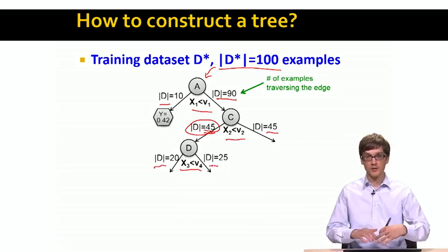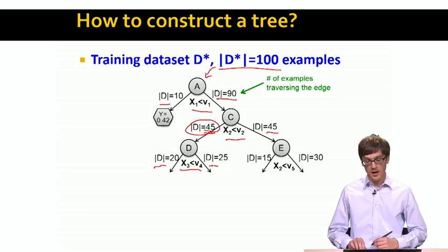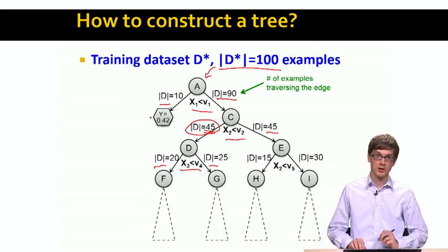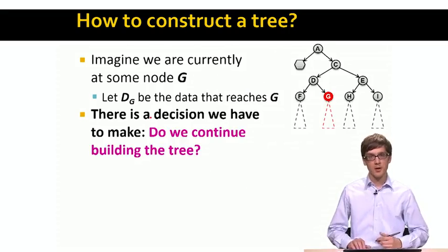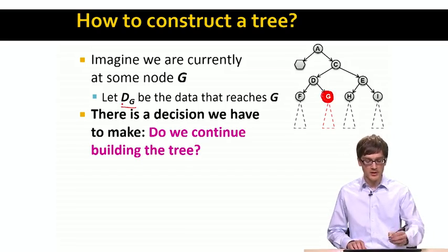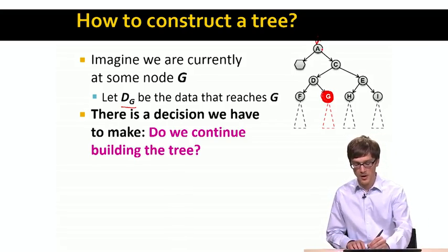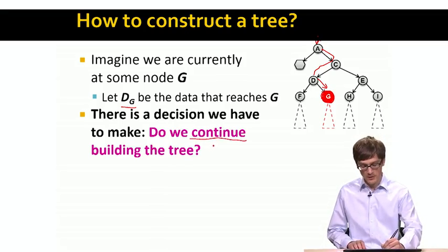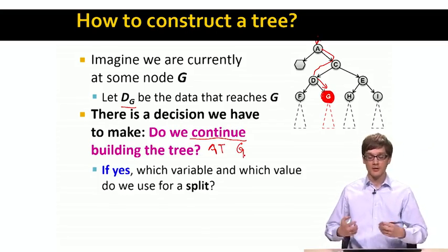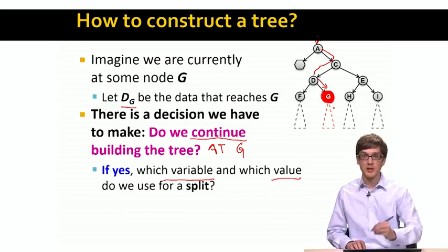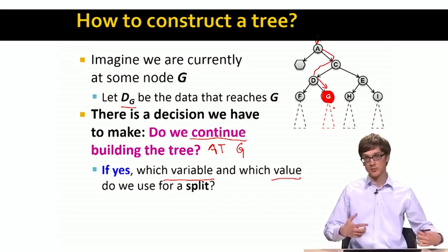With every split, we split our data set into smaller and smaller chunks. The whole process keeps repeating until we decide it's been enough and we want to stop and create a prediction node. The basic operation is that we imagine we are currently residing in some node of the tree — let's call this node g — and let S sub g be the data that reaches this node g. The central decision we have to make is: do we continue building the tree at this node g or not? If yes, the next question is which variable or feature and which value do we create a split upon — what is the condition on which we send some data to the left and some to the right?